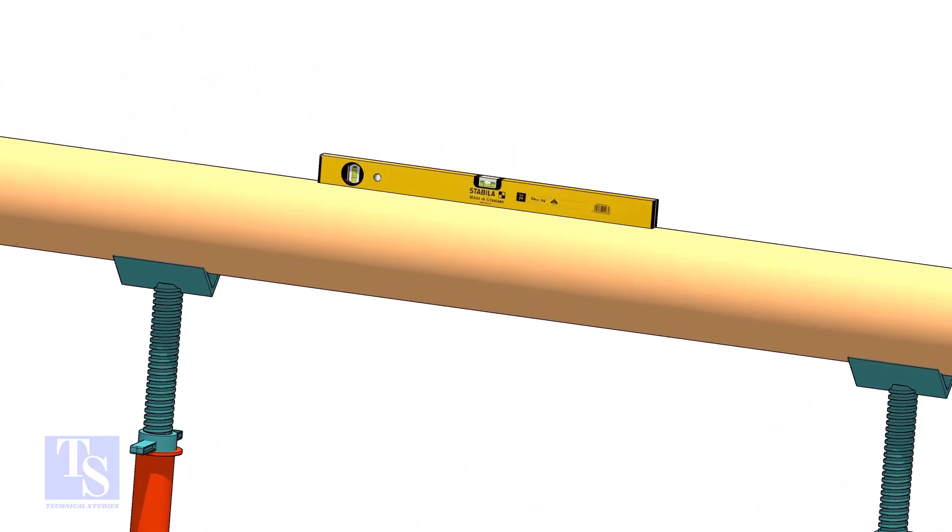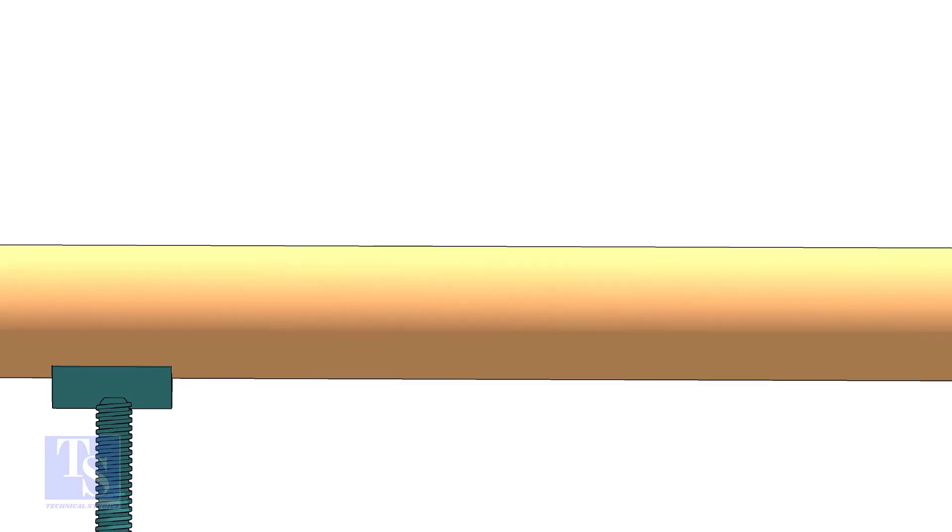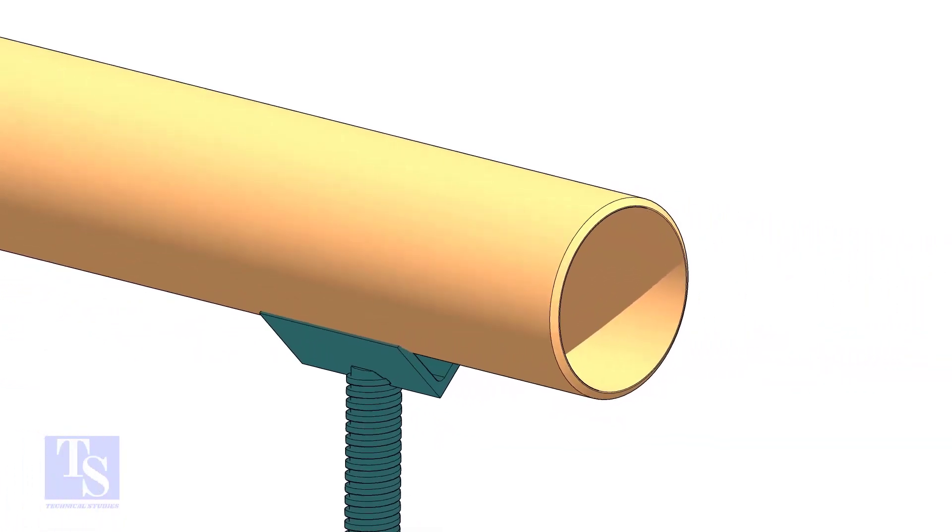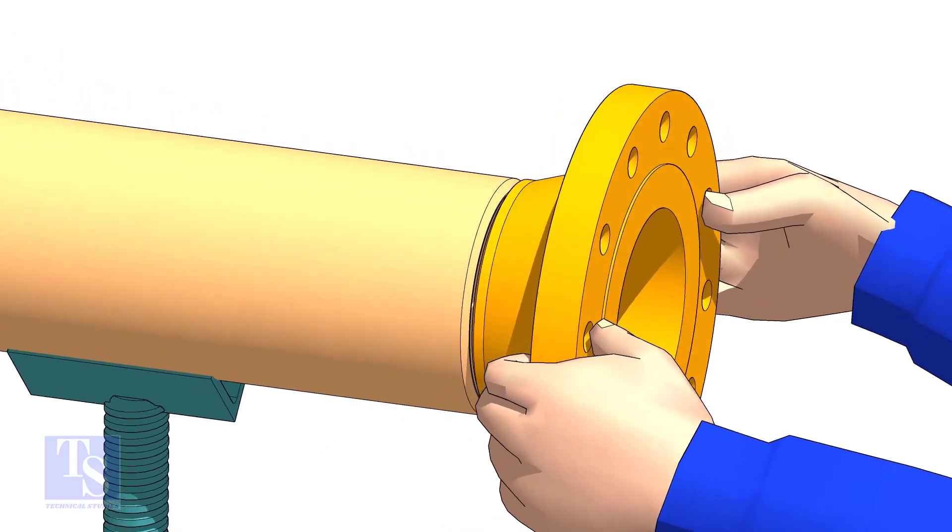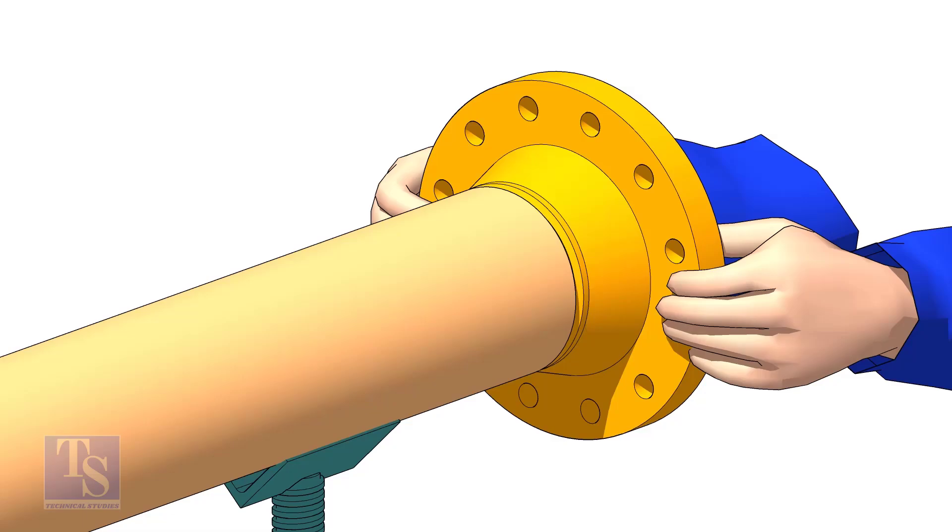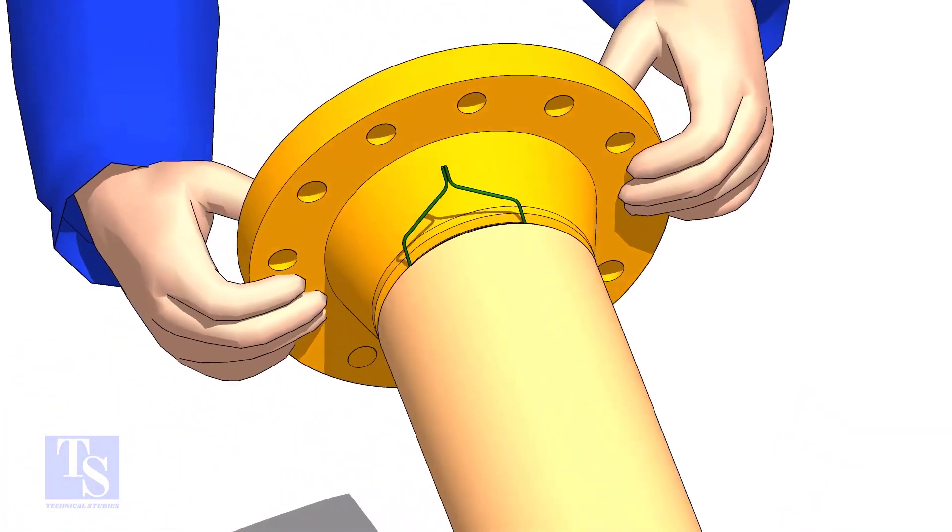Level the pipe. Hold the flange on the pipe face as shown. Put the gap rod in the joint. Look through the flange and the pipe and adjust the overlap.